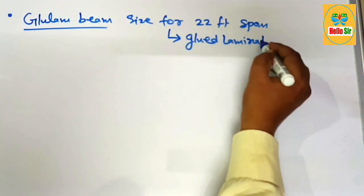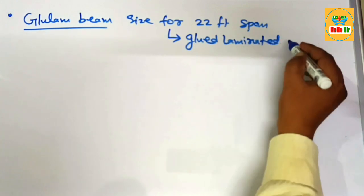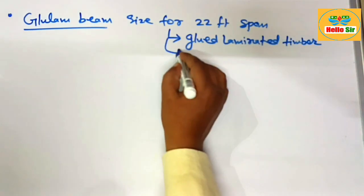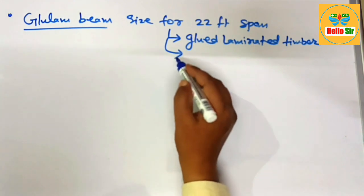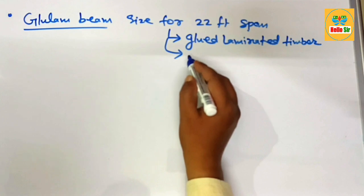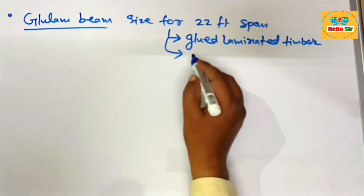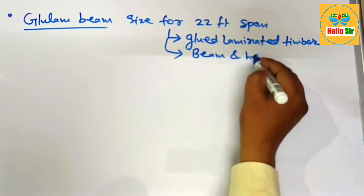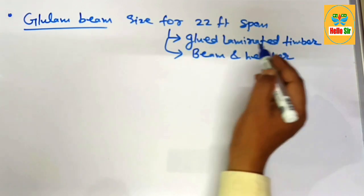What is the full form of glulam beam? This one is glue laminated timber made by sandwiching multiple layers of thin sheets of wood and it is engineered wood product of high strength and it is used as beam and header in building construction.